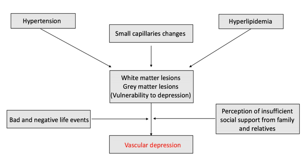A second critique of vascular depression relates to the ambiguity about the causal direction between risk factors and depressive symptoms. It is very difficult to determine if cerebrovascular risk factors cause depressive symptoms or if depressive symptoms instead lead to a worsening of these risk factors, and it may likely be both. White matter lesions, proposed to be a causal risk factor, are common in the elderly and are associated with age. Depression and cerebrovascular risk factors are also common in later life, making it difficult to determine what is the causal factor and to tease apart normal functioning from abnormal in the elderly population.